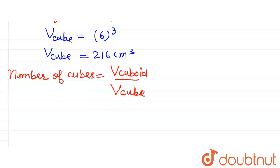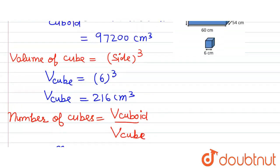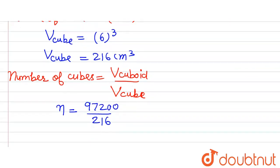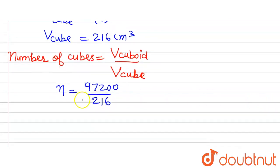So putting in the values, we will get number of cubes, that is N, is equals to 97,200 divided by 216. This will give us the value, that is number of cubes N is equals to 450 cubes. So these are the number of cubes that can be placed inside the cuboid of given dimensions. Thank you.